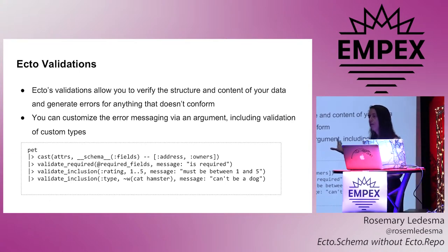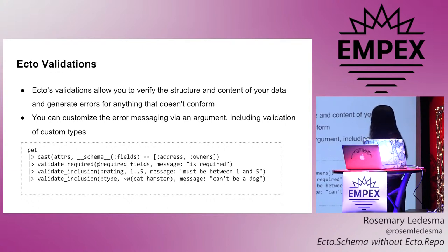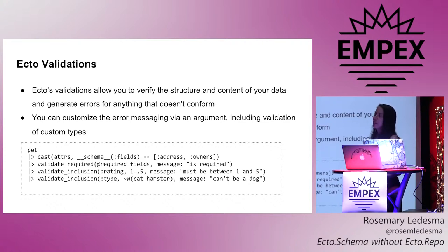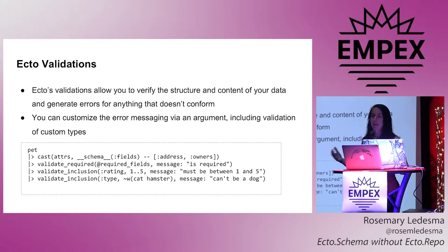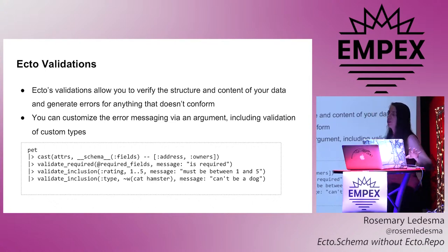Another thing you can leverage is the full power of Ecto's validations, which is significant. There are a lot of pre-existing ones you probably already know about. You can also customize the error messages, which is useful if you're a JSON API and you care about the wording. The default Ecto ones aren't always great — if you're missing a required field, it says it can't be blank, which is kind of a weird wording for a JSON API. But you can just pass a string here for whatever message you'd like. You can also use gettext if you need other languages or smart pluralization.